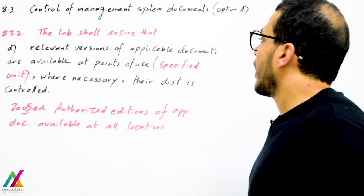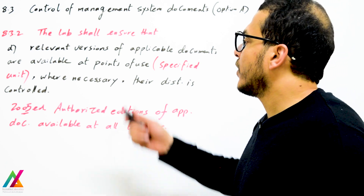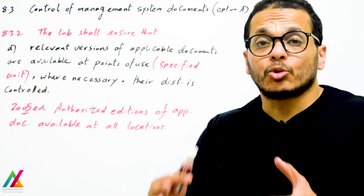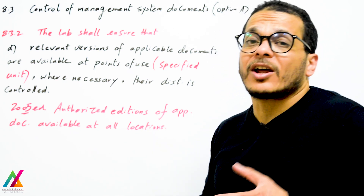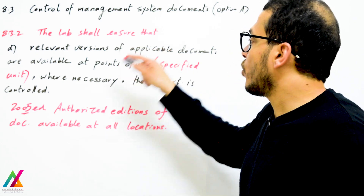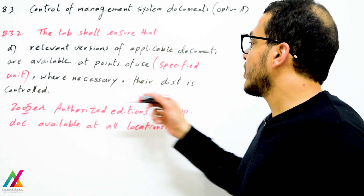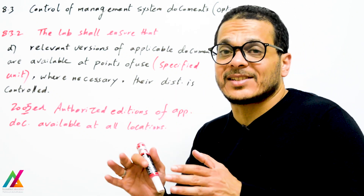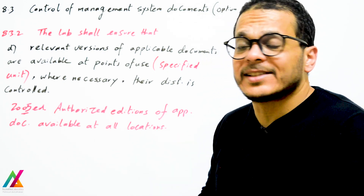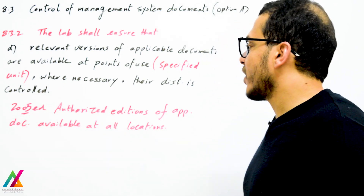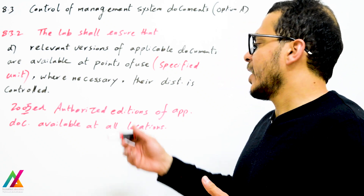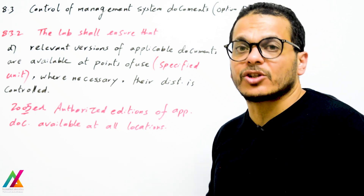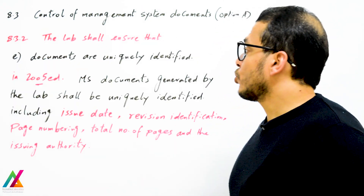The lab shall ensure that relevant versions of applicable documents are available at points of use — at the specified unit. Once a document is approved or authorized, it shall be available at the point of use or the specified unit. Where necessary, distribution is controlled so that each unit has specific access to retrieve their documents. In the 2005 edition this was stated as authorized editions available at all locations — essentially the same requirement.